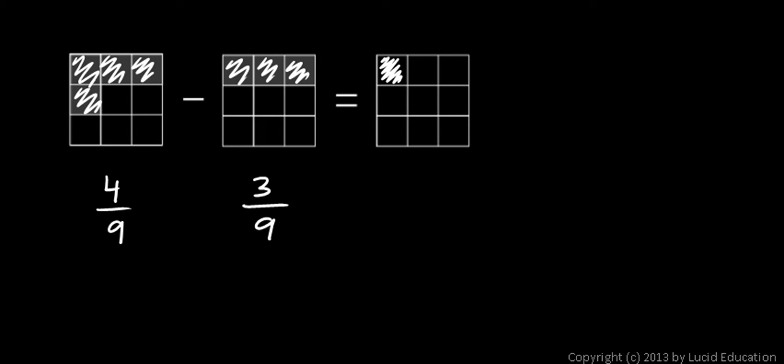So this diagram up top, the whole top row, can be represented by an equation. We can say four ninths minus three ninths equals one ninth.